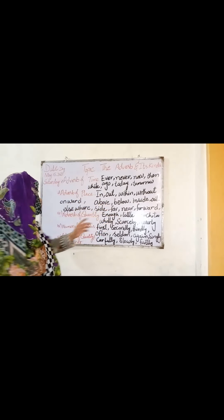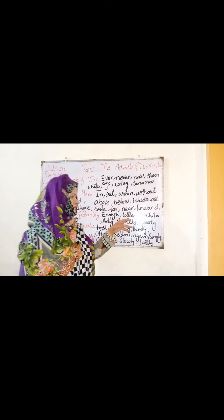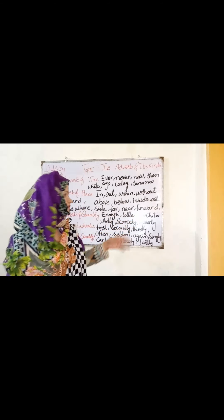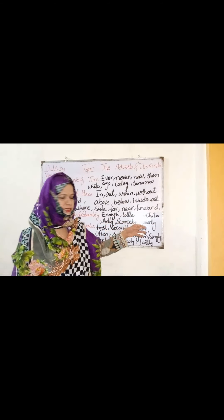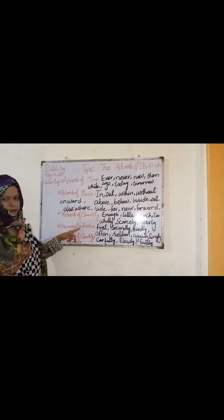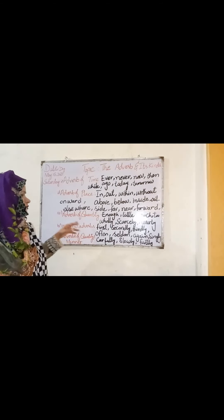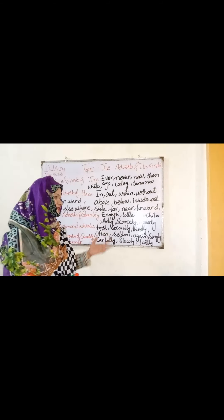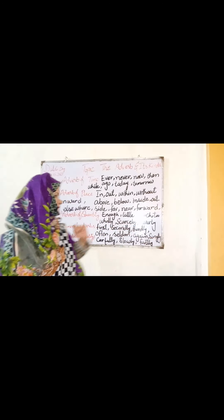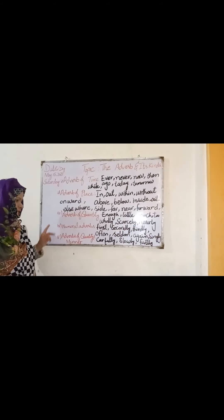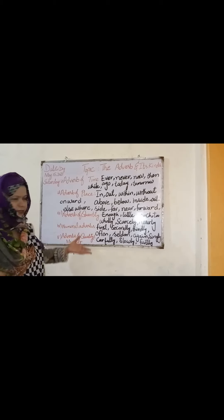Adverb of quantity — how much. Words like little, some, much, too, wholly, scarcely, near. For example: there is some water in the glass. Numeral adverbs indicate number or order — first, second, third, firstly, secondly, thirdly, often, seldom, again, singly. For example: he stood first in the class. These are ordinal numbers used as numeral adverbs.